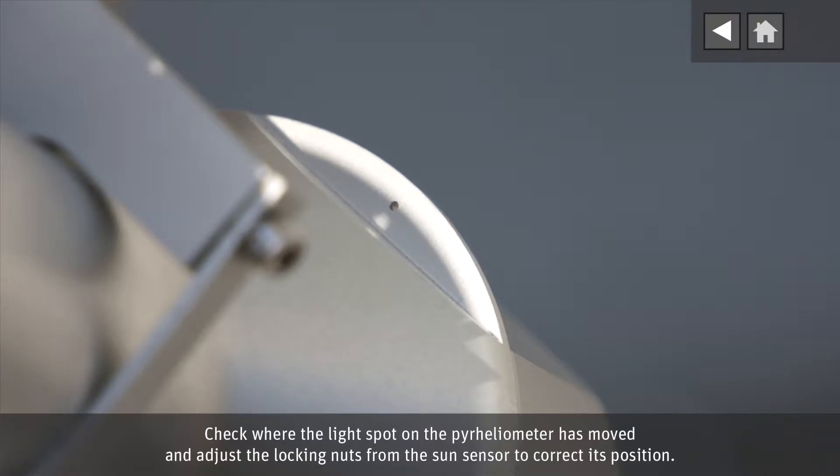Check where the light spot on the pyrheliometer has moved and adjust the locking nuts from the sun sensor to correct its position.